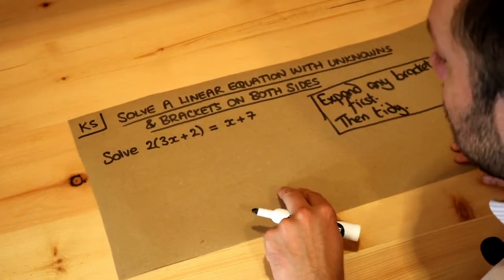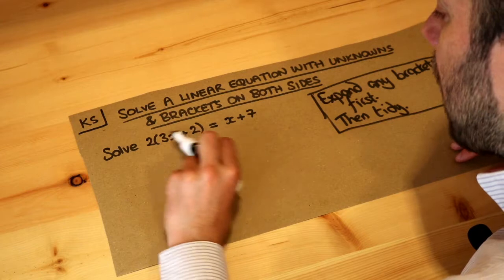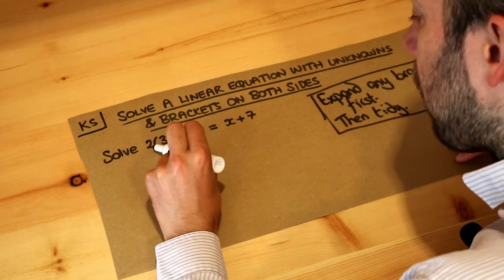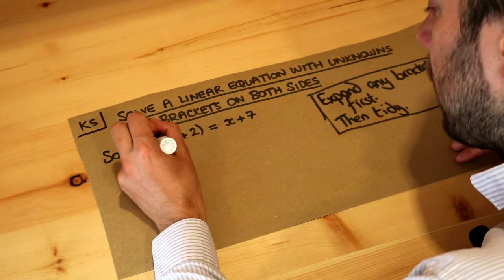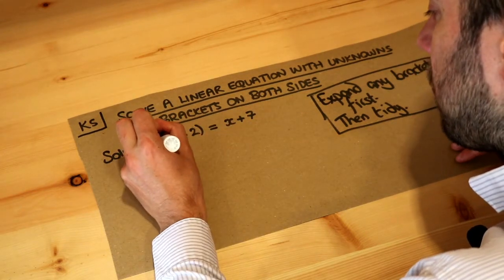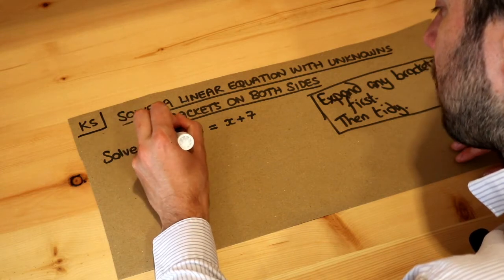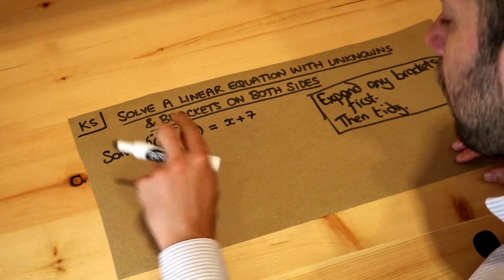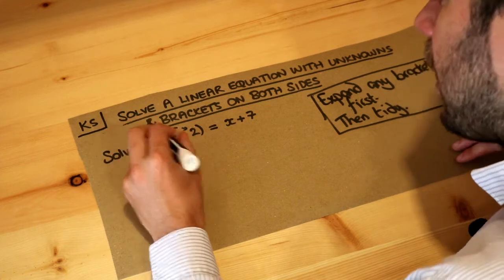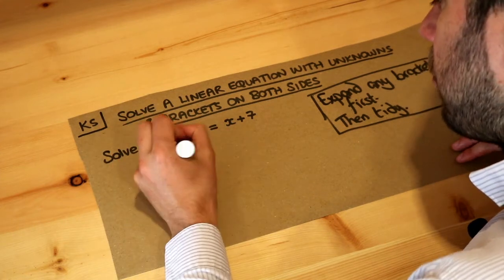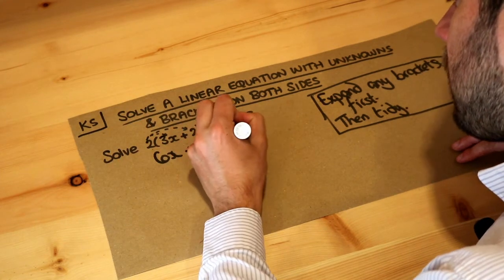If you've got a bracket, remember how we expand it: the thing in front of the bracket gets multiplied by each of the things inside. So the 2 gets multiplied by the 3x and the 2 gets multiplied by the 2. 2 lots of 3x is 6x and 2 times 2 is positive 4, so we've now got this.